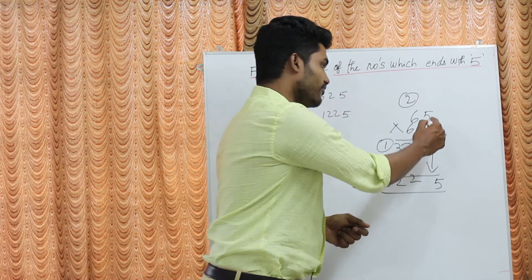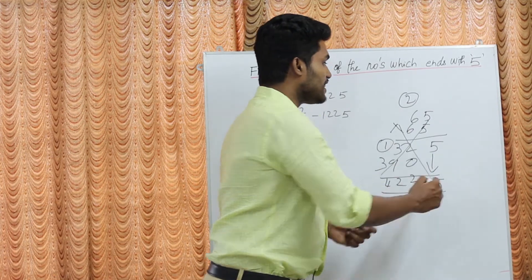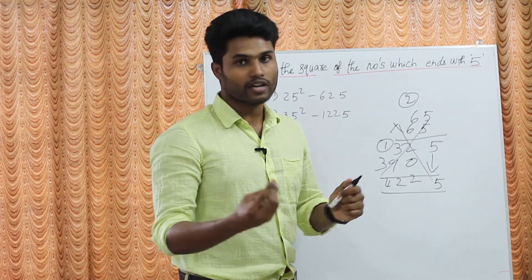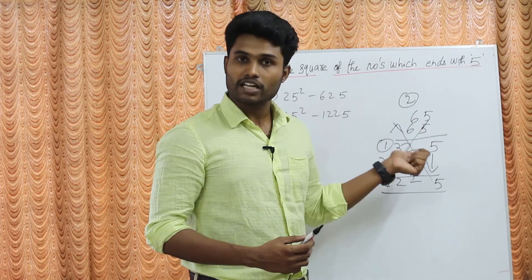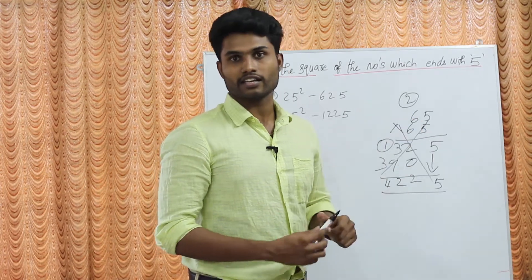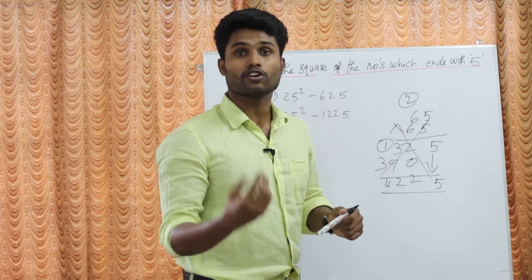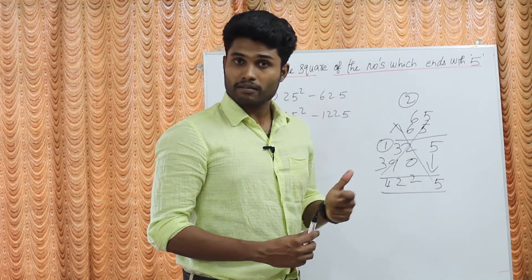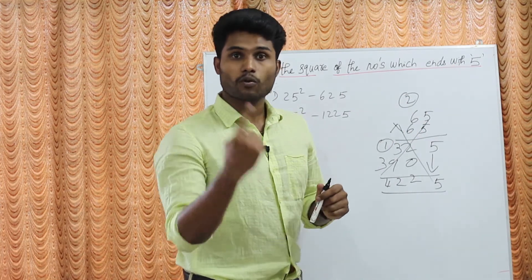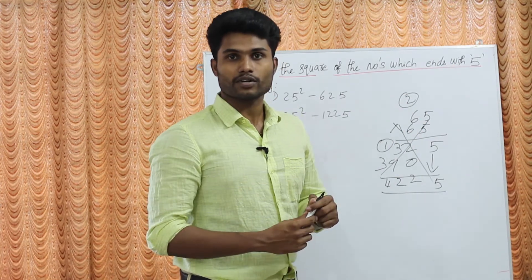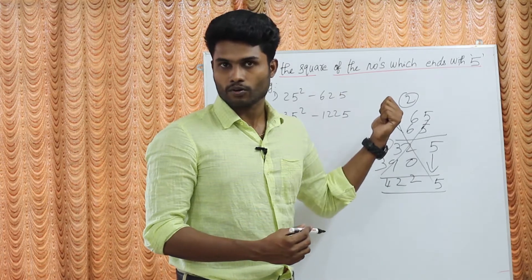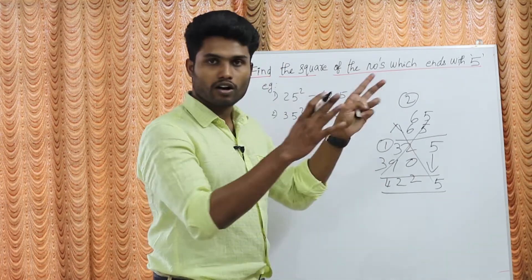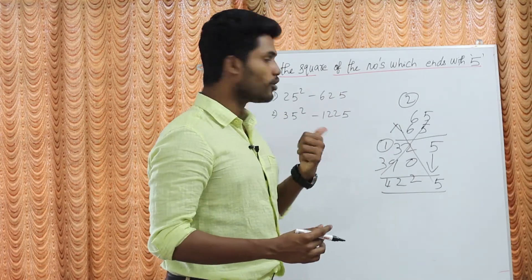Now, how do you do it faster? In simplification questions for bank exams, railway exams — if you multiply the standard way, you waste 10 to 15 seconds. So the idea of this video is to show you a quicker method.